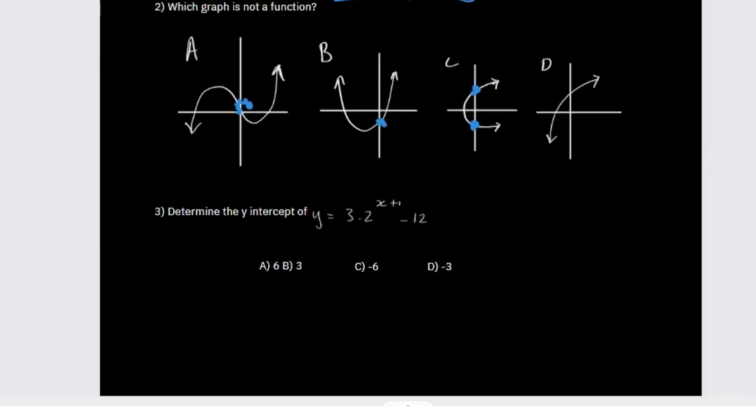Then in D you can see that there's one y-intercept. So the one that is not a function would be number C, and that's how you would solve that. Alright, cool. And then we can just also continue to solve this next question here, which is number three.